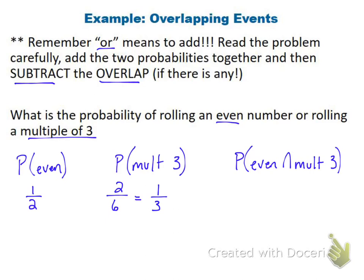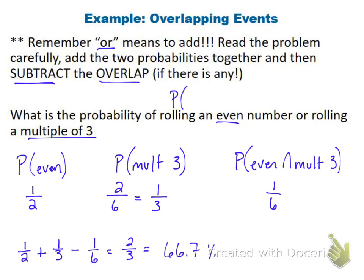To recap that or equation: probability of even and multiple of three is one-sixth, since six is the only number that's both even and a multiple of three. So we do one-half plus one-third minus one-sixth, which equals two-thirds, or 66.7%. Written as an or equation: probability of rolling even or a multiple of three.